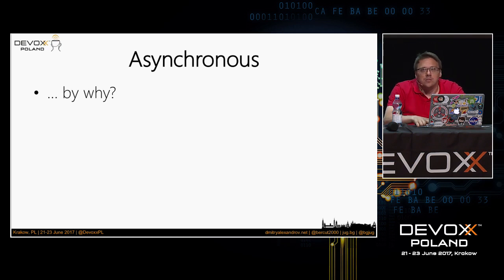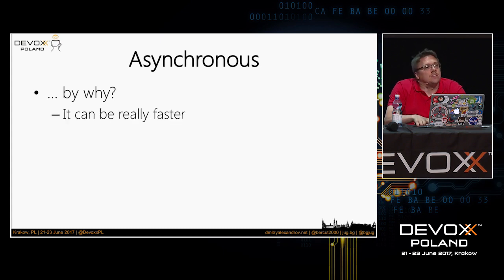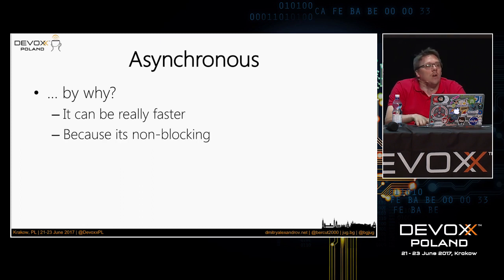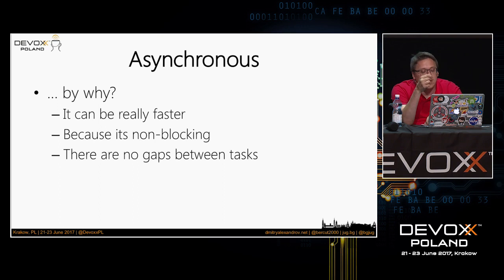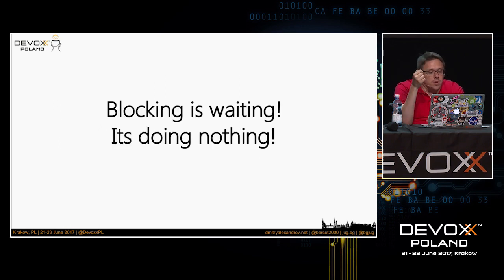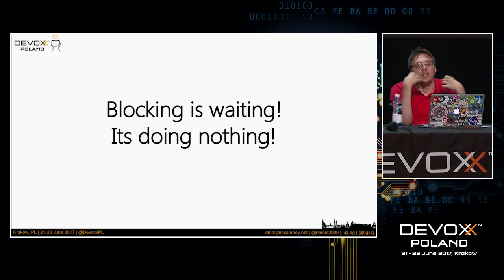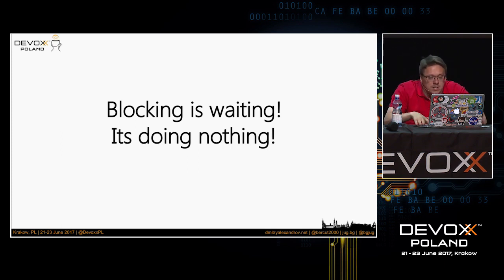Why on earth should we actually do asynchronous stuff? Because it can be really faster. It's a non-blocking approach. There are no gaps between tasks — right after a task is ready, we start with another task. As it's non-blocking, we are actually benefiting from that. Because blocking is waiting — it's doing nothing. And as we do nothing, all other resources are just wasted. We want to avoid that as much as possible.